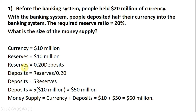We note that reserves equals 0.2 times deposits — that 0.2 represents the required reserve ratio. So, reserves will equal 20% of deposits. Solving for deposits by dividing through by 0.2, deposits equals reserves divided by 0.2, which simplifies to deposits equal 5 times reserves. 1 divided by 0.2 is 5.